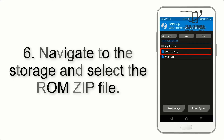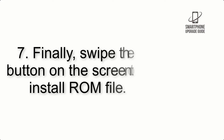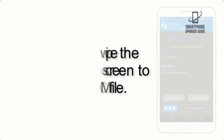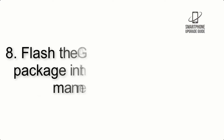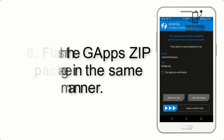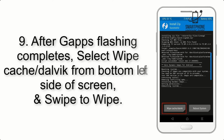Step 5: Go back to the recovery main screen and tap on the Install button. Step 6: Navigate to the storage and select the ROM zip file. Step 7: Finally, swipe the button on the screen to install the ROM file.